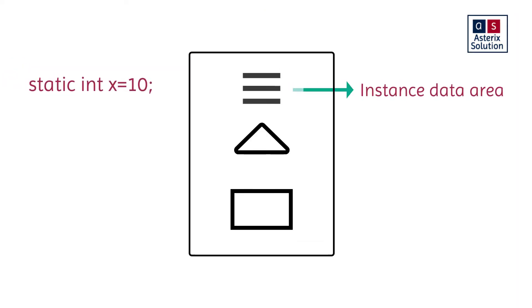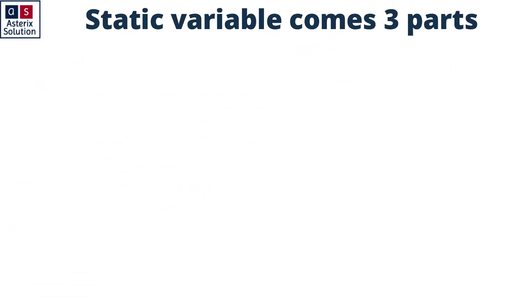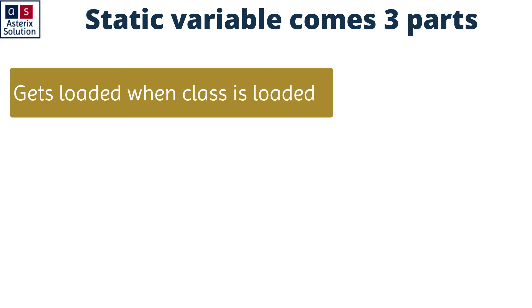Now when you declare a variable of nature static, it by default comes up with three parts for you. First part: it will get loaded when the class is loaded.